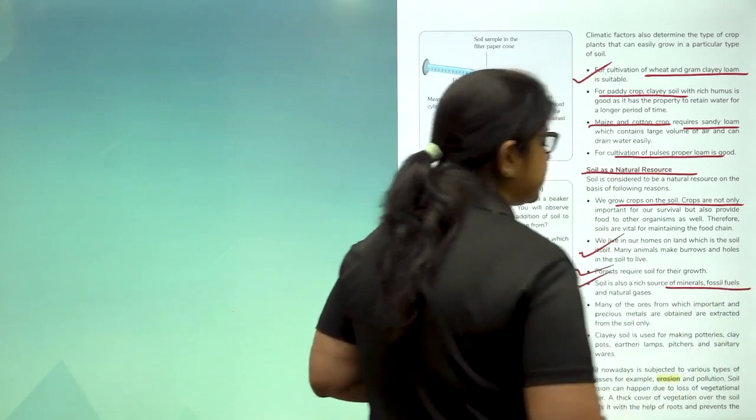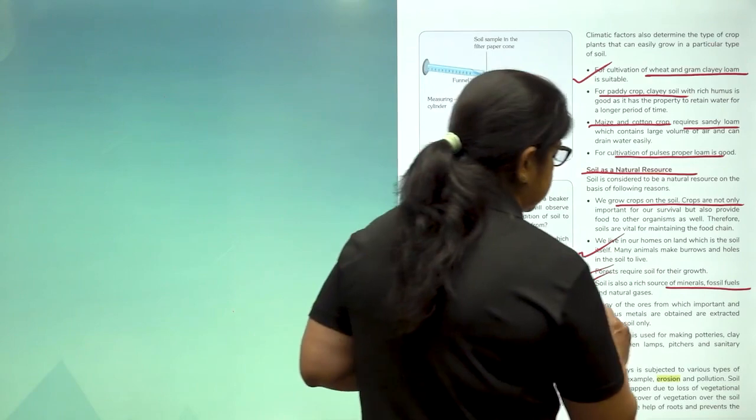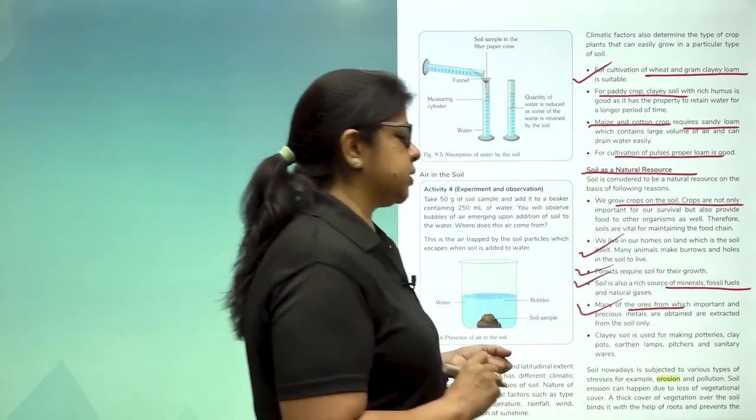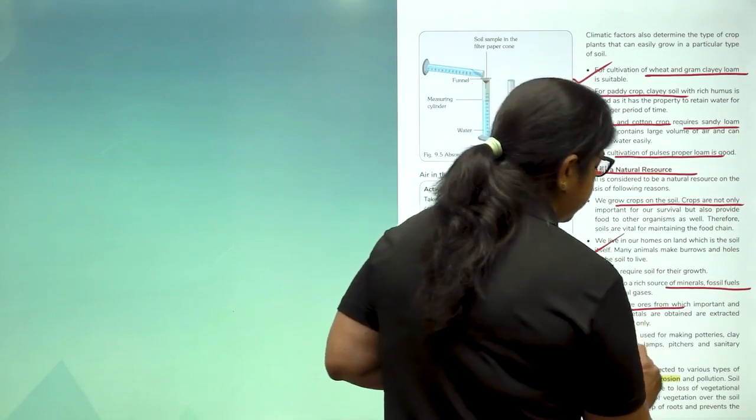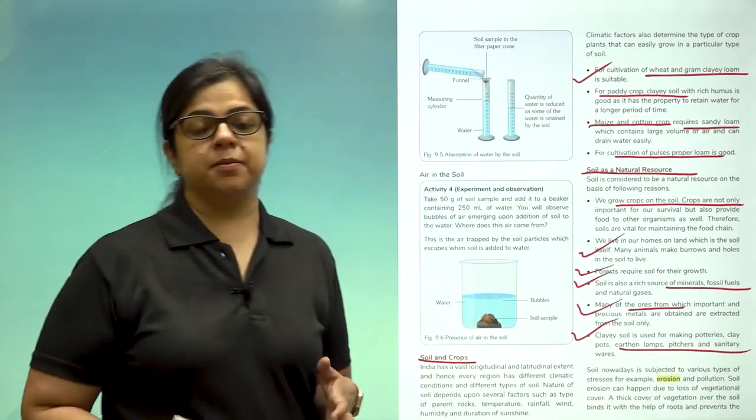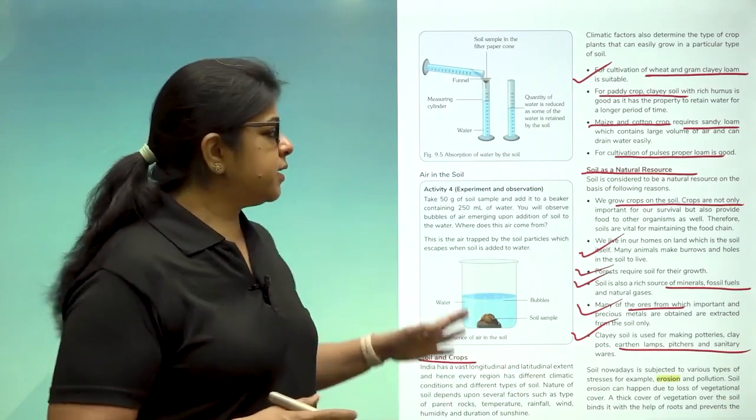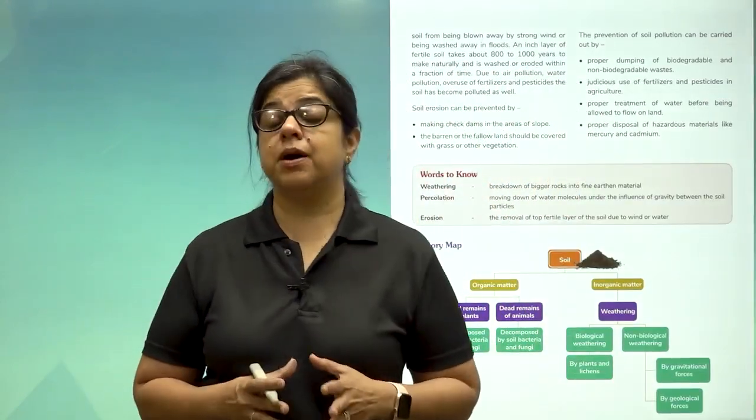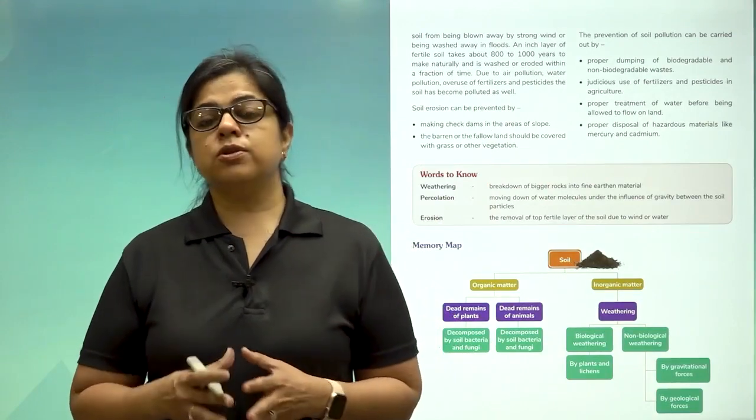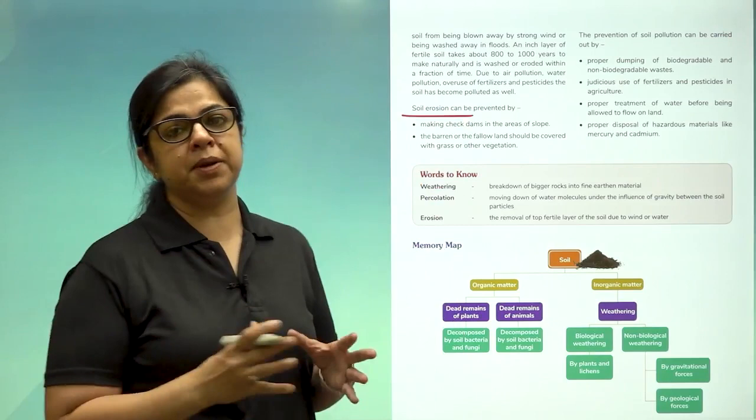Then soil also provides minerals, fossil fuels, and natural resources. Many important ores are obtained from soil. Clay soil also finds its use in making clay pots and so many other things. So children, in this chapter we have learned so many different things about soil. Let us also understand why and how soil erosion can be prevented.